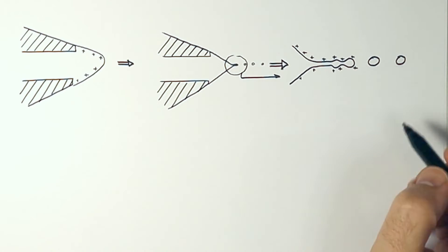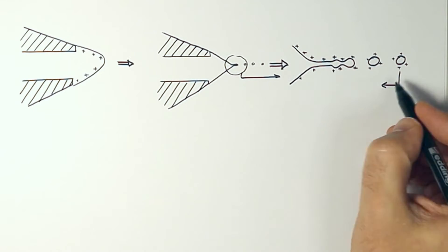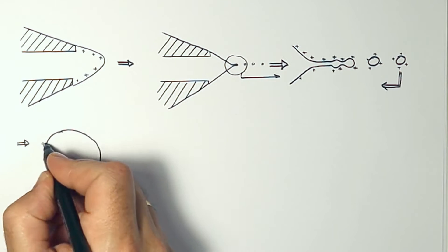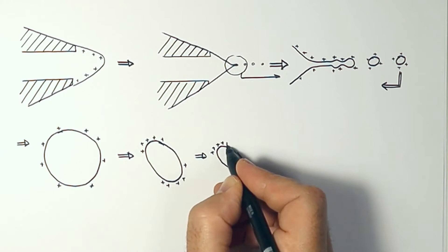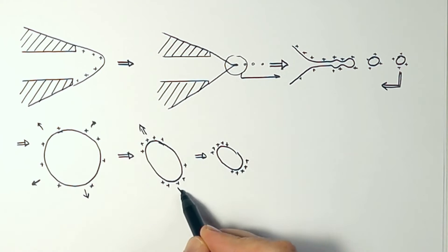Electrospray droplets are very small and evaporate rapidly. As solvent evaporates, the electric charge is confined into a collapsing volume. Eventually, surface tension can no longer hold electrostatic stress and the droplet explodes.